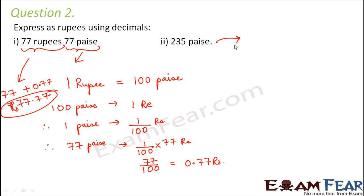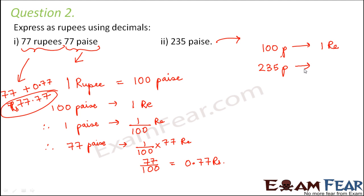Similarly, if you are asked to convert 235 paise: again 100 paise corresponds to 1 rupee, so 235 paise corresponds to 235 divided by 100 rupees. When you divide this, you get 2.35 rupees.